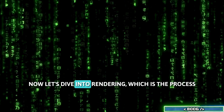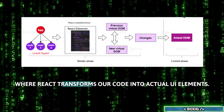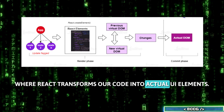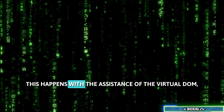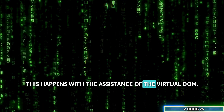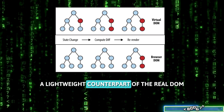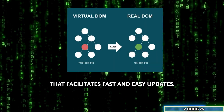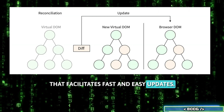Now let's dive into rendering, which is the process where React transforms our code into actual UI elements. This happens with the assistance of the virtual DOM, a lightweight counterpart of the real DOM that facilitates fast and easy updates.